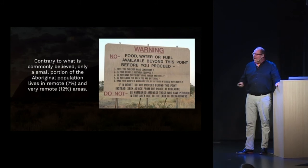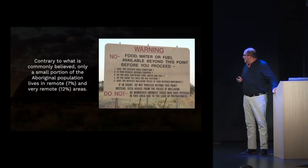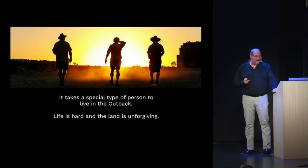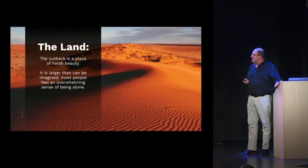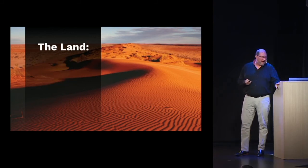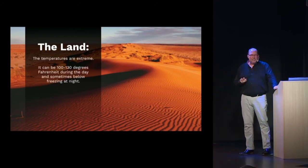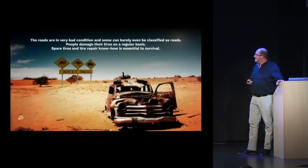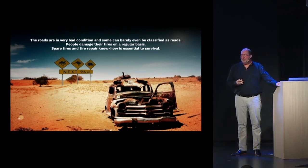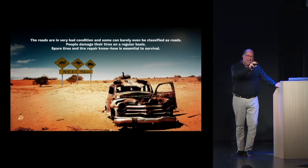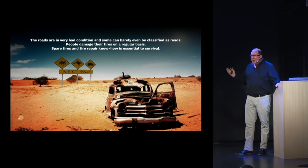For those going out into the Outback, please read the warning signs carefully. Do not be numbered amongst those who have perished due to lack of preparedness. It takes a special kind of person to live in the Outback — life is hard and unforgiving. Temperatures can be 100 to 130 degrees Fahrenheit during the day and go to freezing at night. The roads are in awful condition; some can't even be classified as roads, going from a solid line to a dotted line to nothingness.